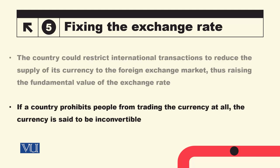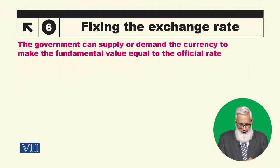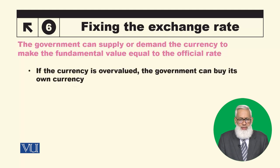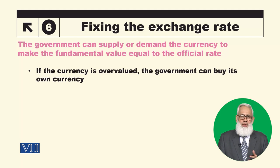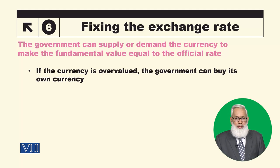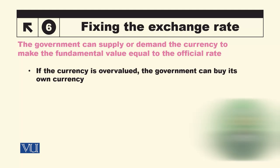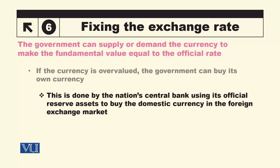If a country prohibits people from trading the currency at all, the currency is said to be inconvertible — that is the extreme case. To some extent, the government can manage supply and demand for the currency to make the fundamental value equal to the official value. If the currency is overvalued, the government can buy its own currency. This is done by the nation's central bank using its official reserve assets.